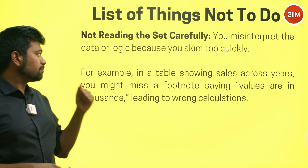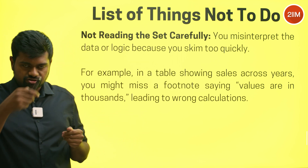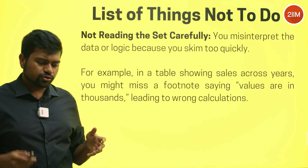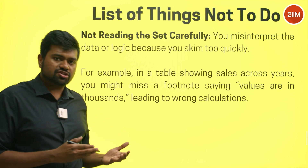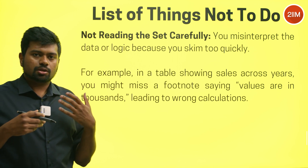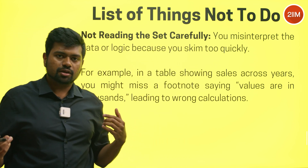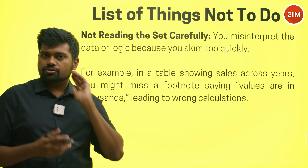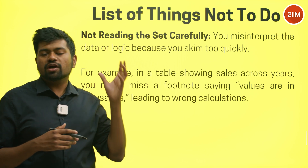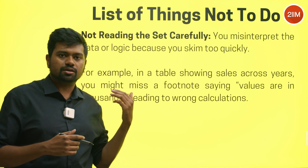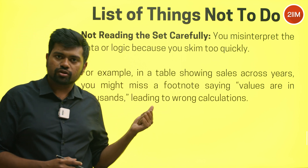Step one: not reading the set carefully. People do this a lot — you rush through the instructions and what's given. During CAT you're in a heightened state of anxiety, having just finished the VARC section. You don't read properly, you misinterpret data, and you carry assumptions because the set feels familiar to something you've solved before.